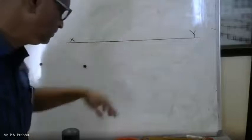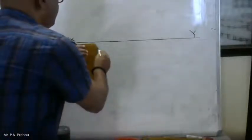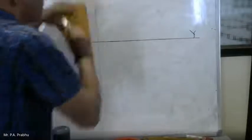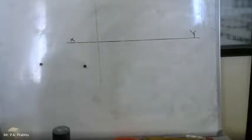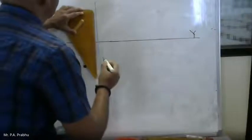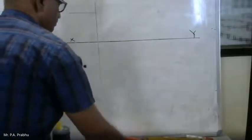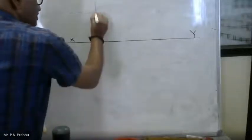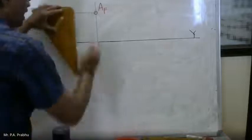First, draw the reference line, then the front line, and draw the projection line anywhere. The projection line must be the same. In the front view, we will complete the front first. The distance about HRP will always be seen in a front view. Mark the position of the given point and show this distance.